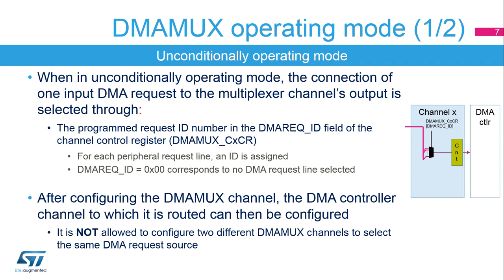It is not allowed to configure two different DMA-MUX channels to select the same DMA request source. The DMA-MUX event output is generated when the DMA request counter reaches the value 0; its operation will be explained in the next slides.